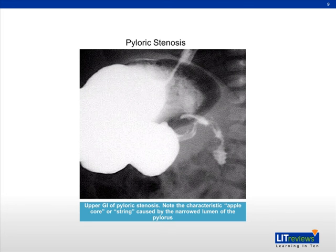Another study that can be performed is an upper GI study of a patient with pyloric stenosis. You can see the apple core or string sign toward the right of this image, where you see an elongated pyloric canal, given that the muscles are making this canal smaller than they normally would be on an upper gastrointestinal study.